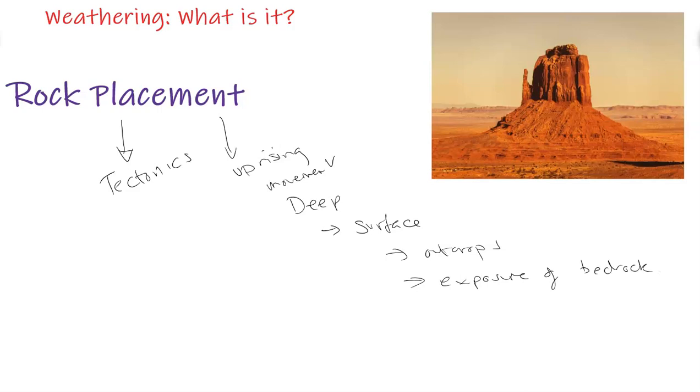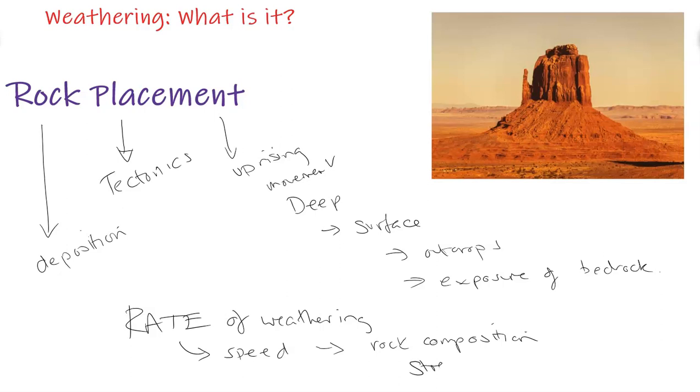So once you have even deposition, like with some sedimentary rocks deposited in a certain area on the surface, they're exposed to the elements. So this placement plus the elements can dictate the rate of weathering. So the rate being the speed and how fast things can weather away and break down. That's based on also the rock composition in terms of its strength, in terms of its elements and minerals that is inside the rock. And this can lead to differential weathering, where a certain area or landscape would be weathered at different speeds, leaving formations.